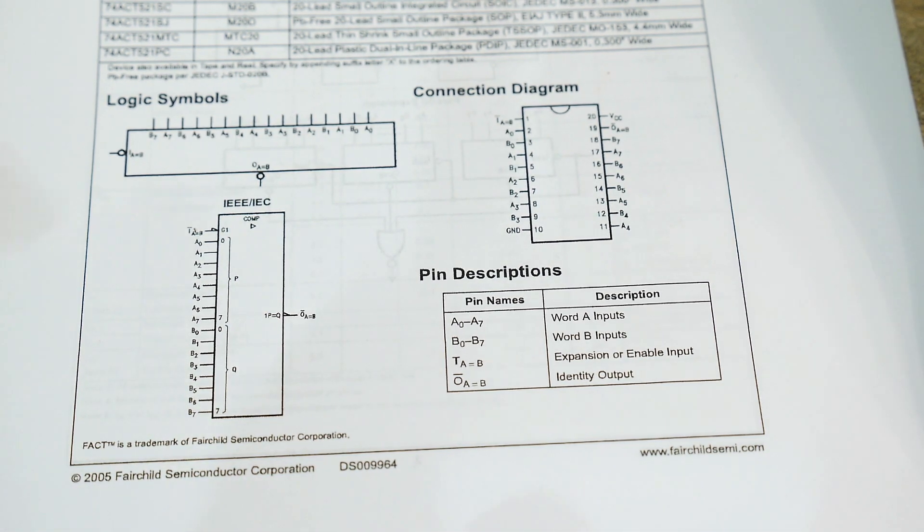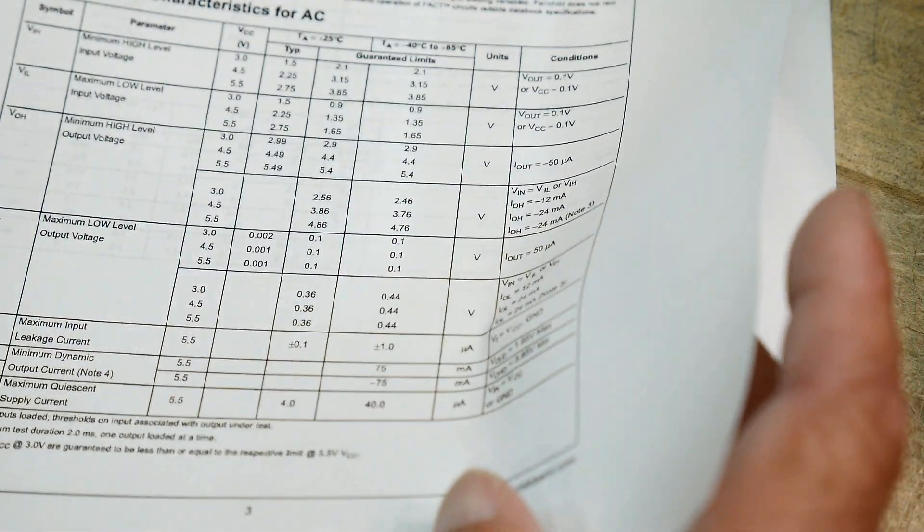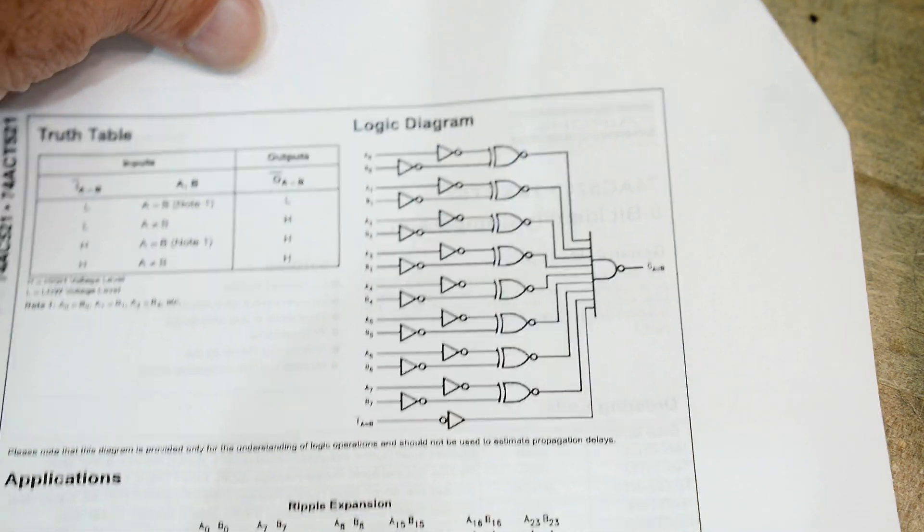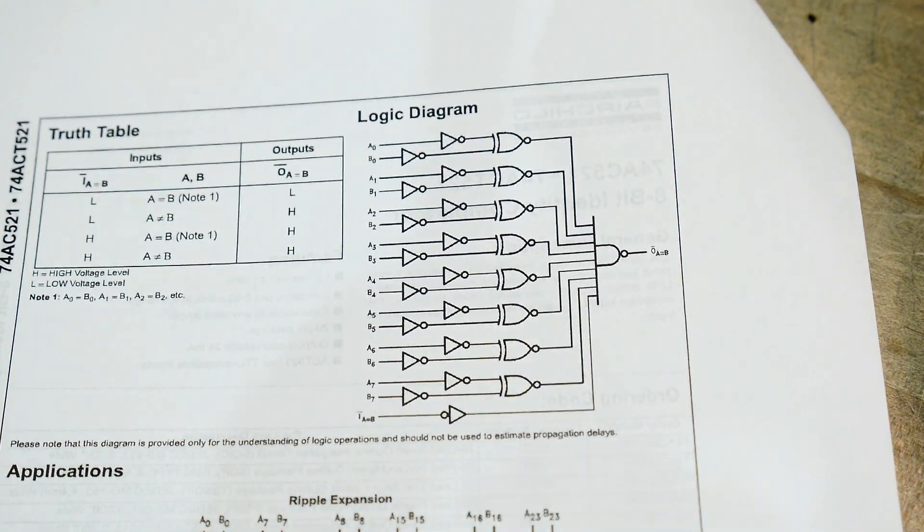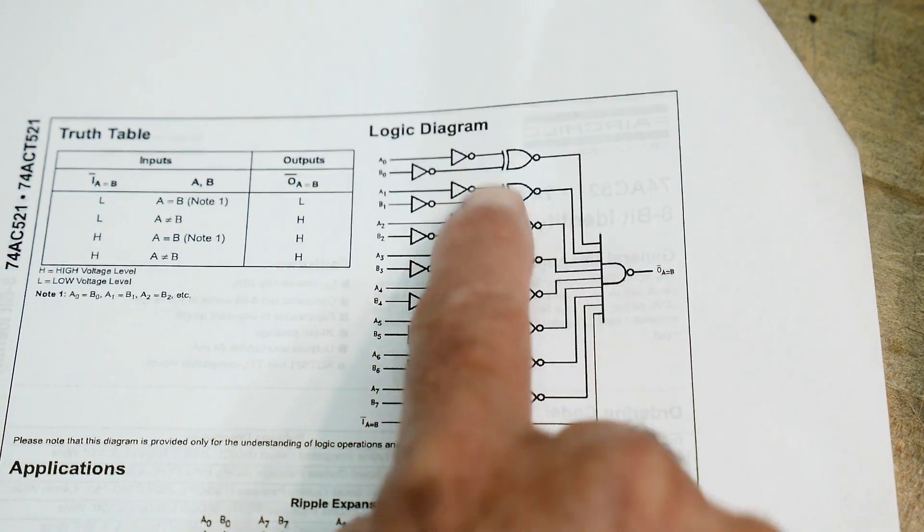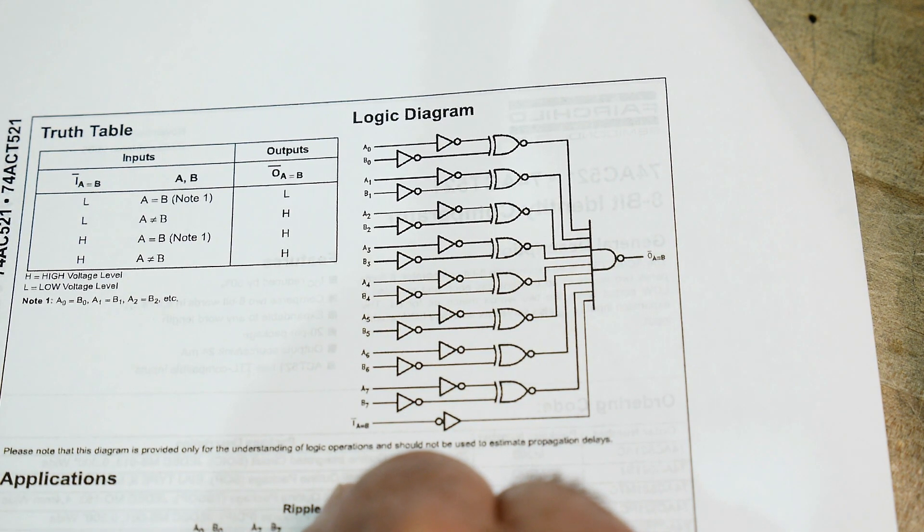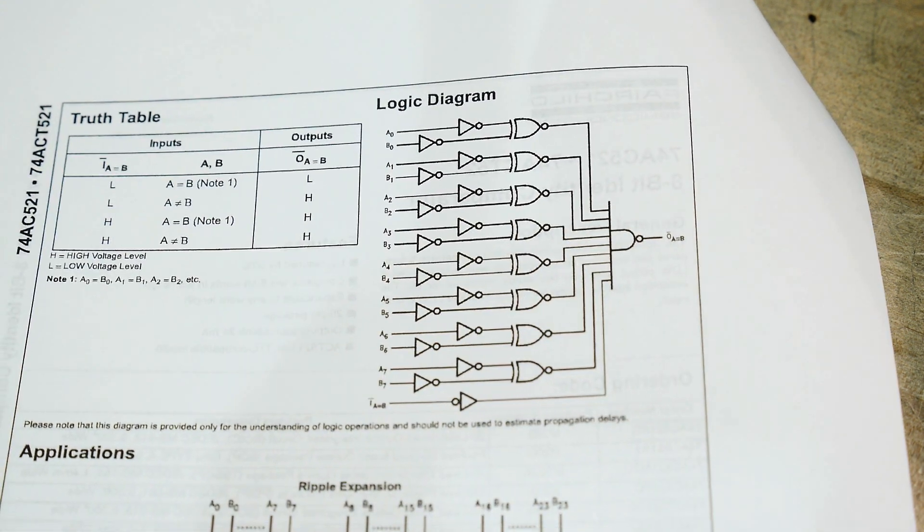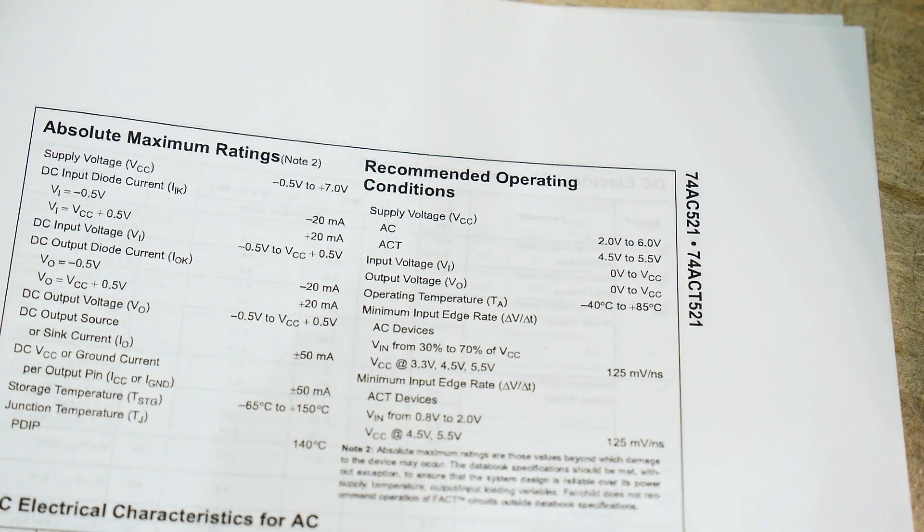Let's see what else we can learn from this part. Oh, here we go. This is how it's accomplished by a bunch of exclusive NOR gates and then one big NAND gate. And then you can ripple them if you want to have even more bits.